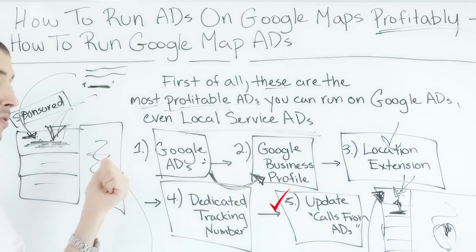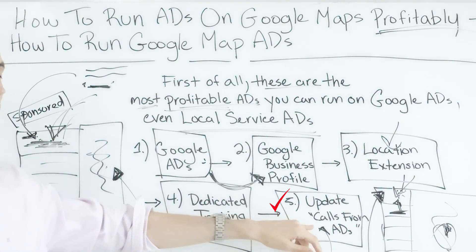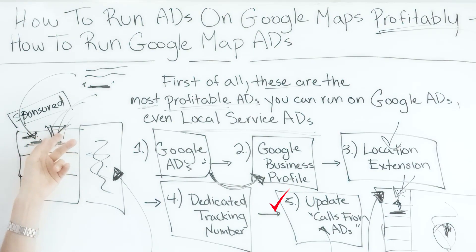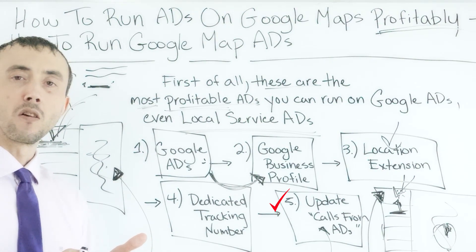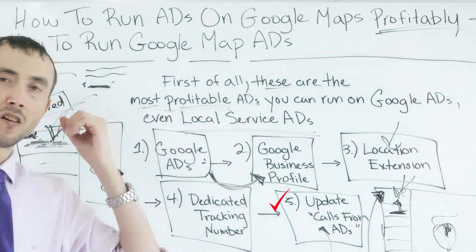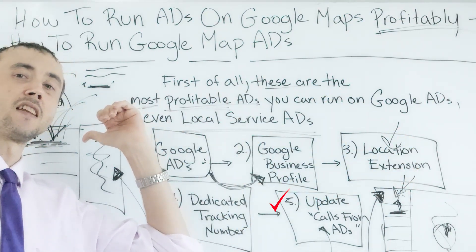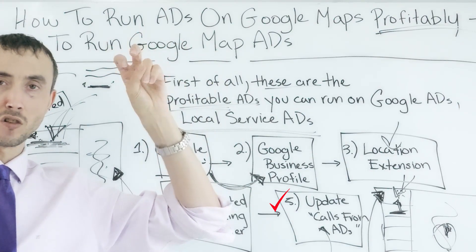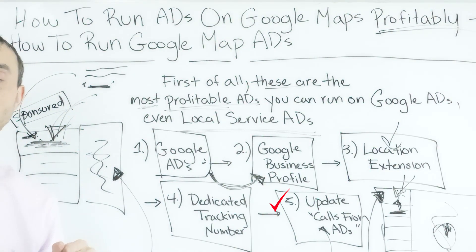To clarify: if somebody clicks on the phone number designated to track calls from your sponsored listing, you get charged for a click. But if they're on a desktop device and manually punch that number into their phone and call, Google doesn't charge you for a click because they didn't necessarily know it happened. Call Rail will pass that data back to Google Ads, but Google hasn't charged for a click in that case even though a conversion is registered.